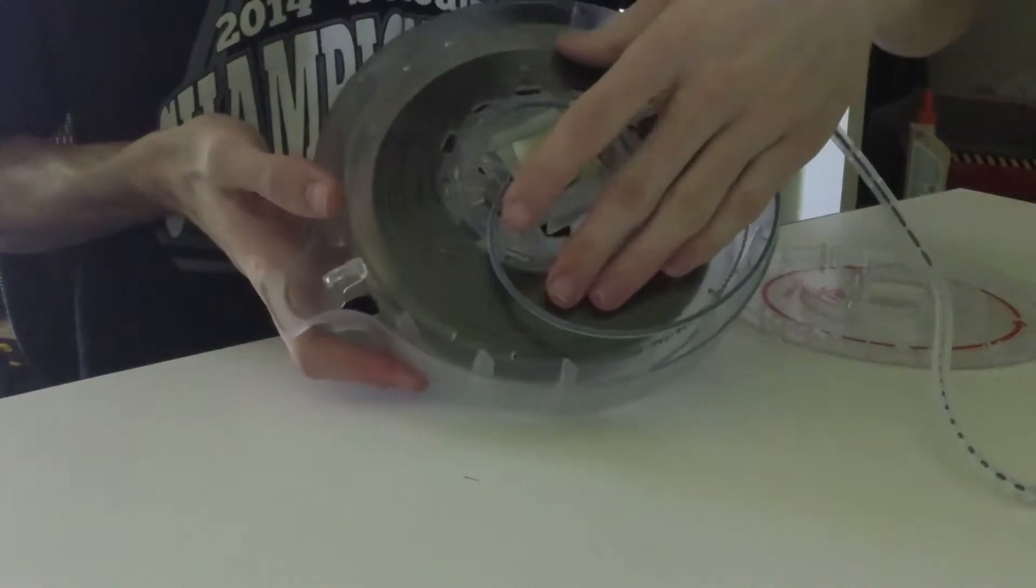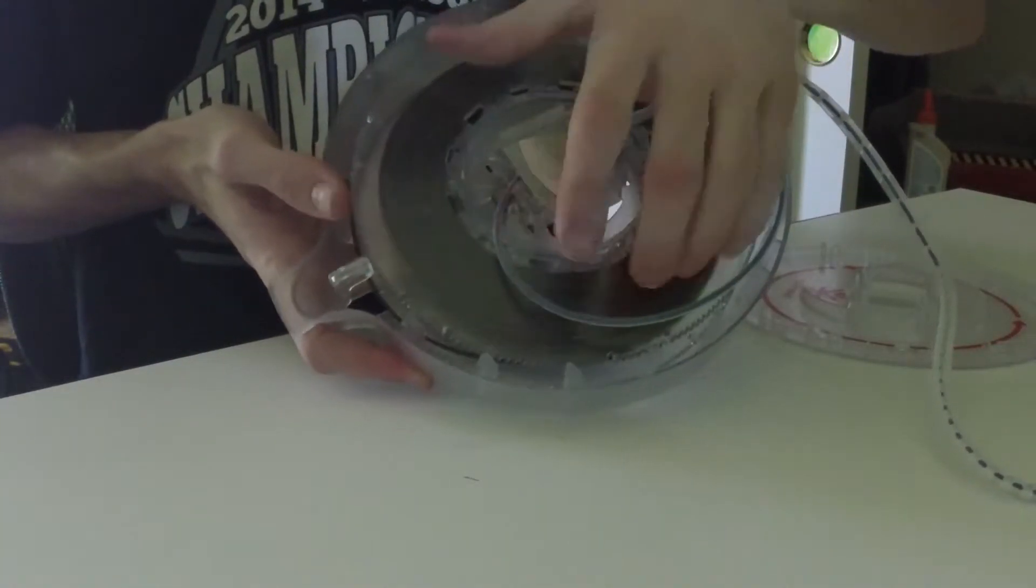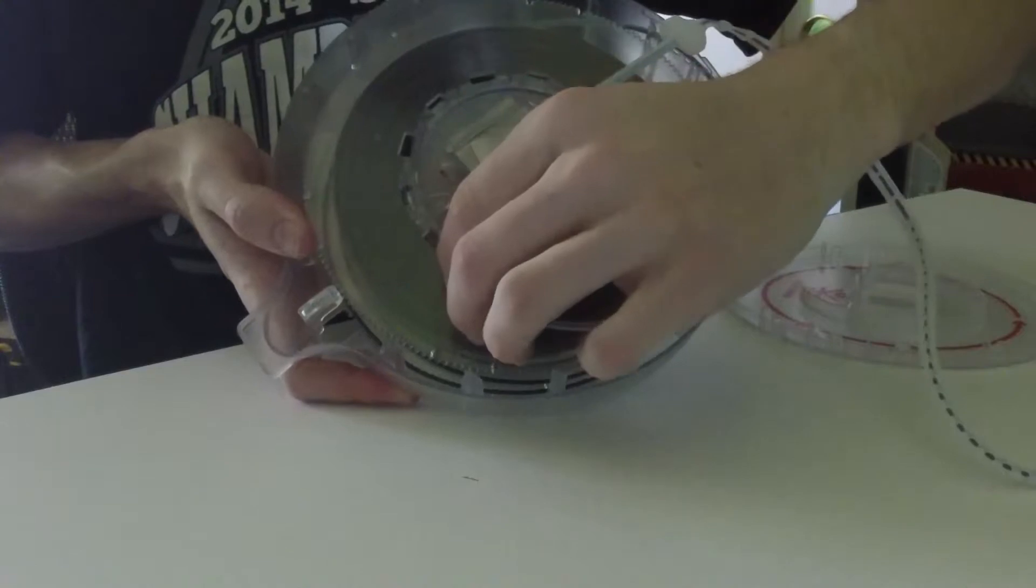Once you've removed the top, unroll the filament spool slightly so you can pull back the plastic sheath to expose a segment of filament.